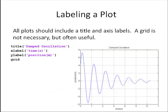At a minimum, we generally should include a title and axis labels. A grid is not necessary but often helpful. The commands to add that are the title command, xlabel command, ylabel command, and grid command. The basic format for using title, xlabel, and ylabel is just to enter your title as a string in the argument. We call that a string since it's in quotes, single quotes.